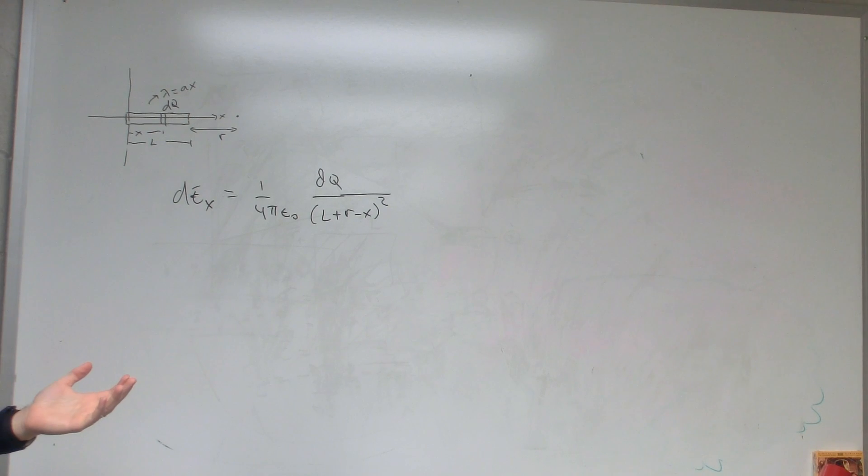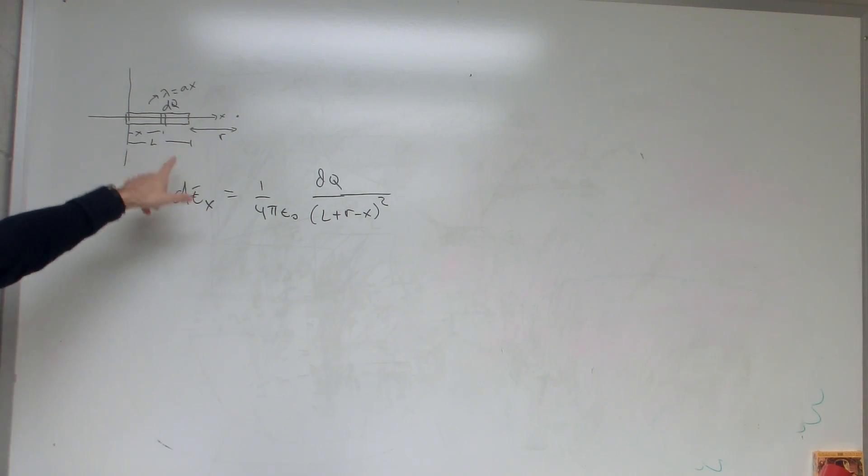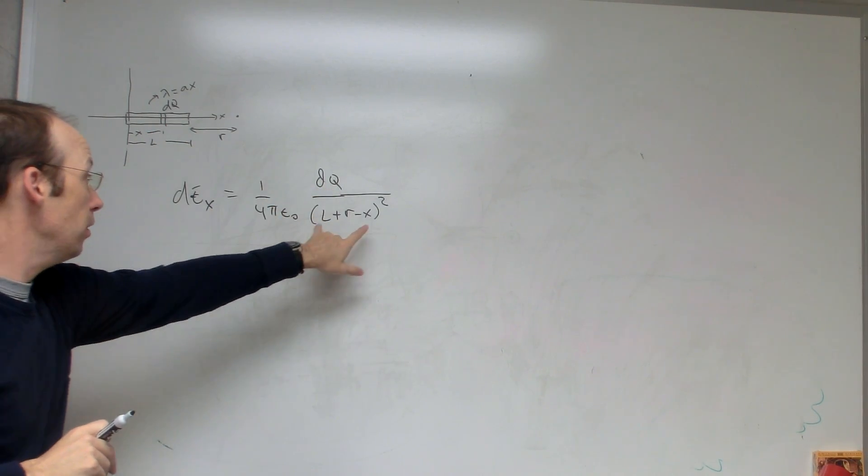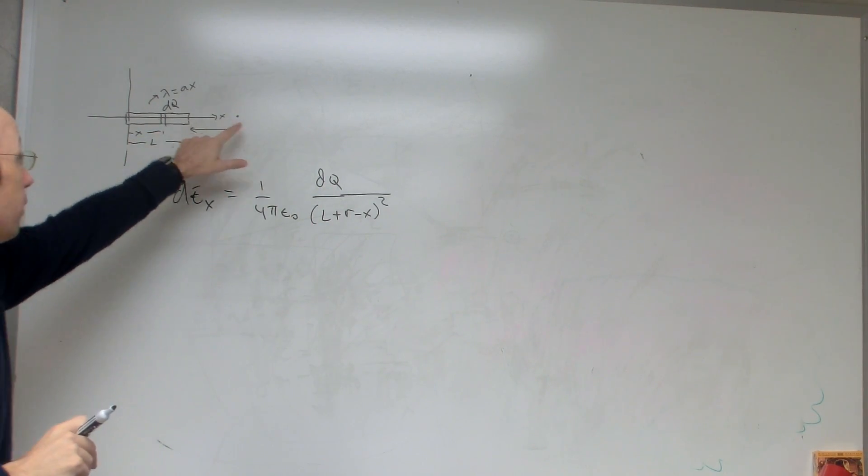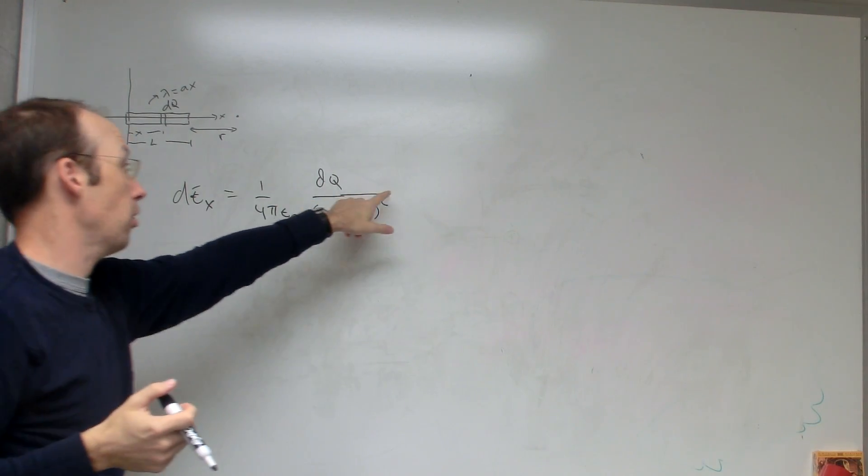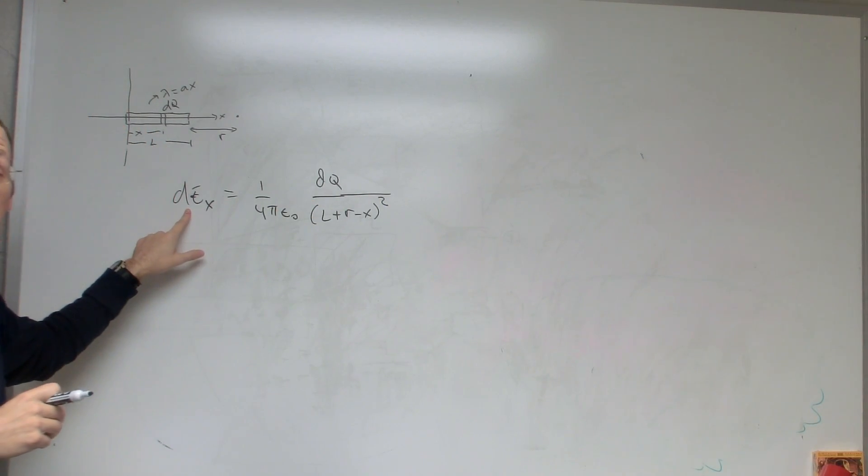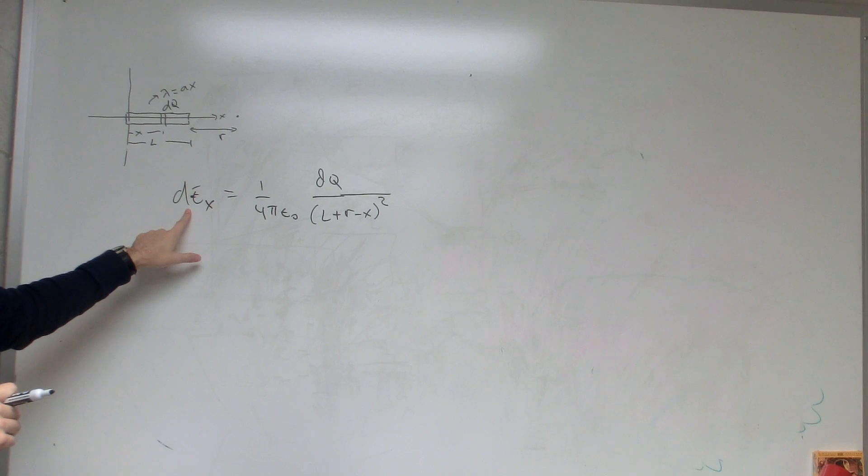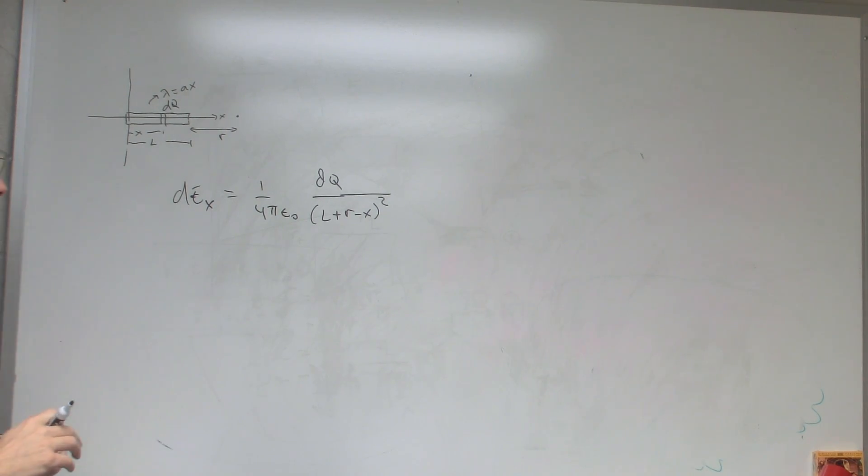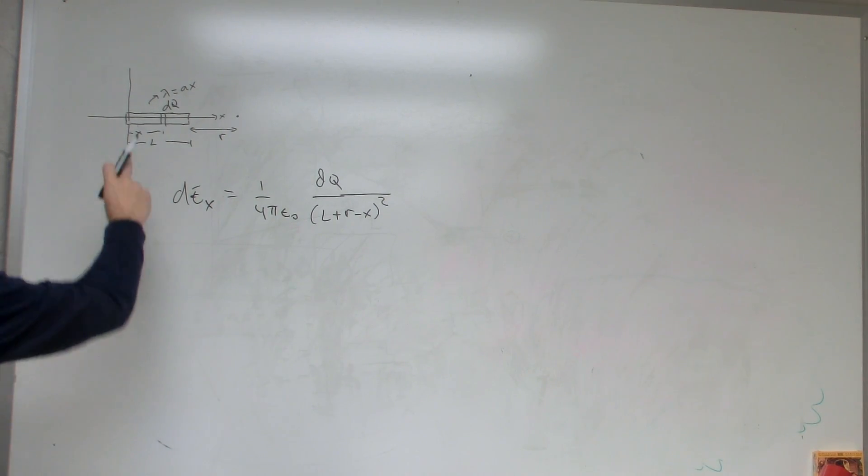That's it. Okay, that's the electric field due to that little piece right there. As a point charge, it has a charge dq, and this is the distance from here to there. And I don't have an r hat because I've written it as a scalar component.